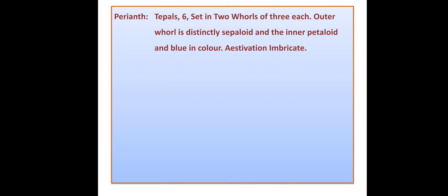Calyx and corolla are not differentiated but are united to form a structure called perianth. The members of the perianth are named tepals — the word 'tepal' is derived by combining half of 'sepal' and half of 'petal.' The perianth has six tepals arranged in two whorls of three each. The outer whorl is distinctly sepaloid — green or colorless — while the inner whorl is petaloid and blue in color. The aestivation of the perianth is imbricate.